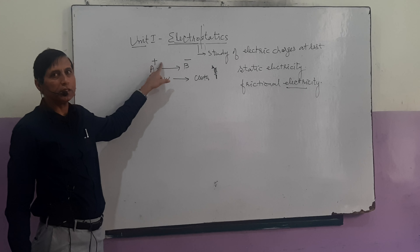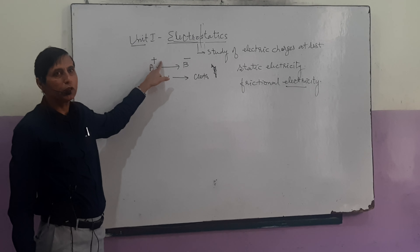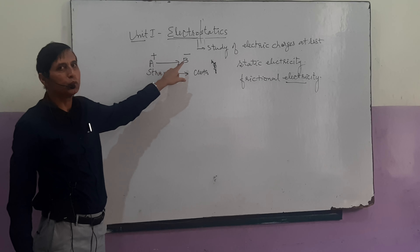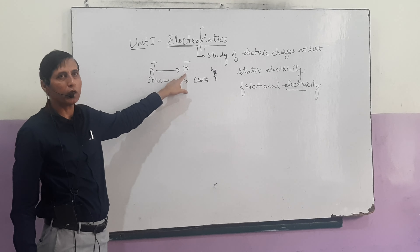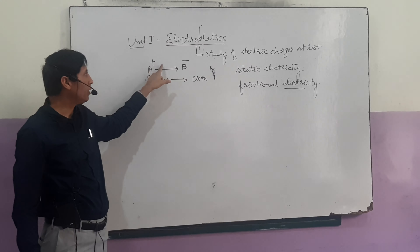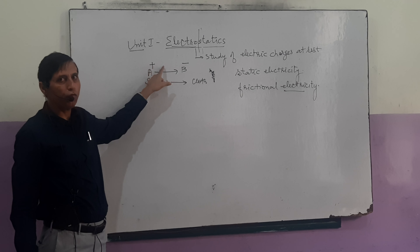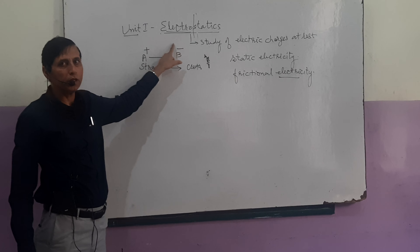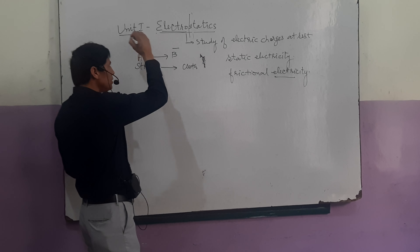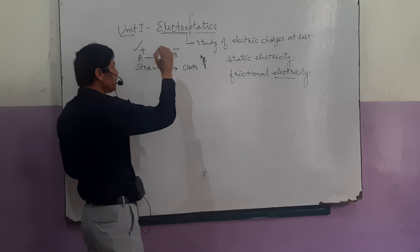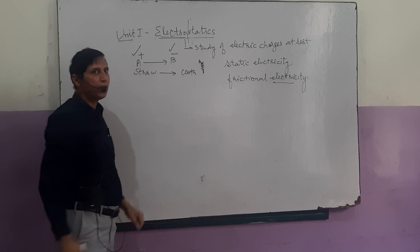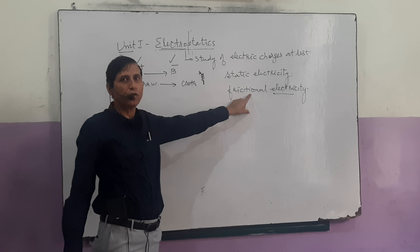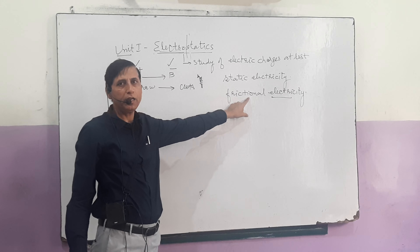This is the reason why it is called frictional electricity — it happens on account of friction between two bodies. When two bodies are rubbed together, due to friction some electrons are transferred from body A to body B, so body A becomes positively charged and body B becomes negatively charged.